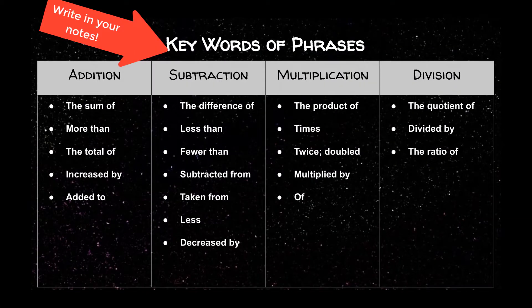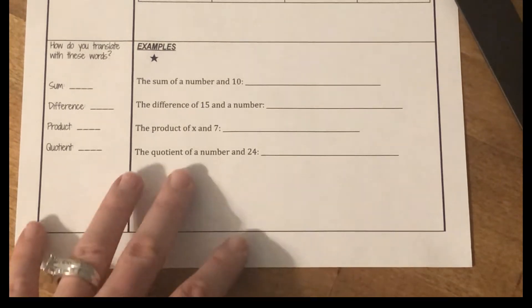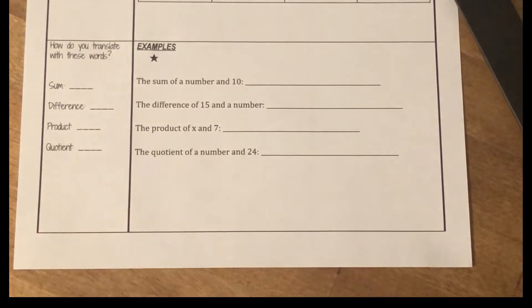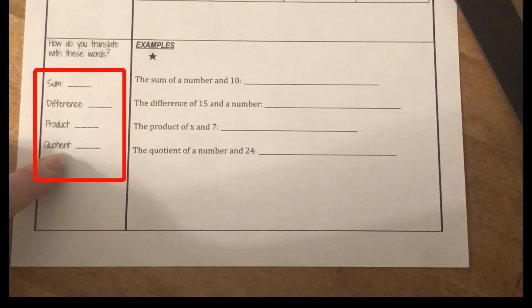Find your 4.1 notes now and open up to that first chunk. You're going to see a table that looks similar to mine here. Go ahead and pause the video and copy down the keywords or phrases for each operation. We're going to start translating, first working with words like sum, difference, product, and quotient.